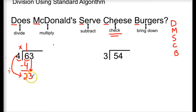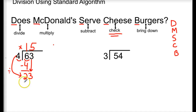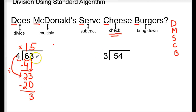What number times 4 gets us close to 23, but we can't go past 23? That is going to be 5. We record the 5 on top of the 3 in the ones place. Then we multiply — 5 times 4 is 20, and the 20 gets recorded underneath the 23. Our next step is to subtract: 23 minus 20 is 3. Our next step is to check — is 3 less than 4? Yes, it is. Next step is to bring down, but there's nothing left to bring down. So my quotient is 15 and my remainder is 3.